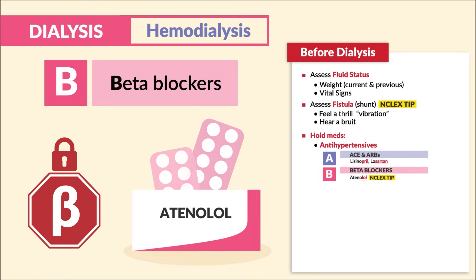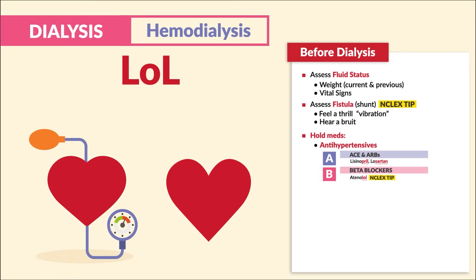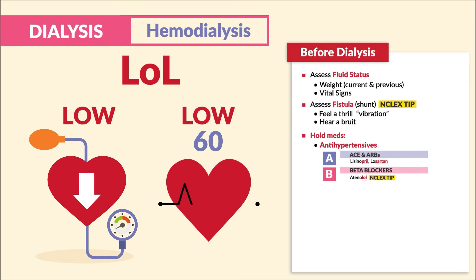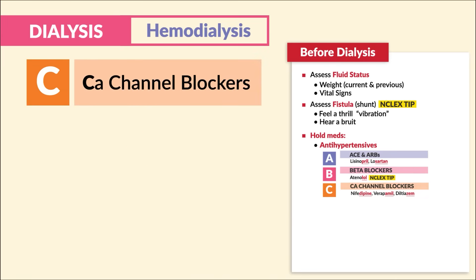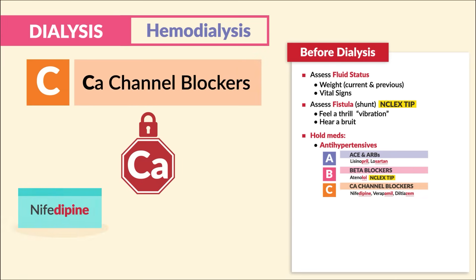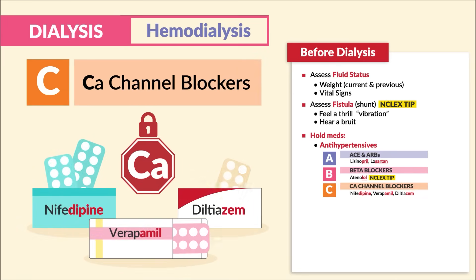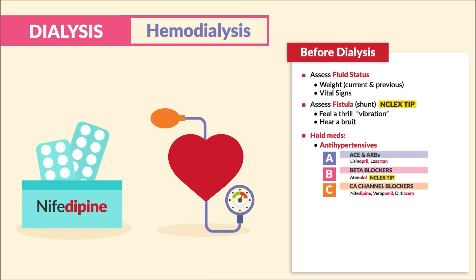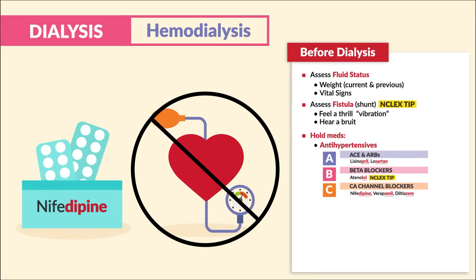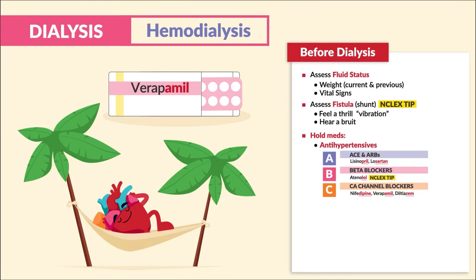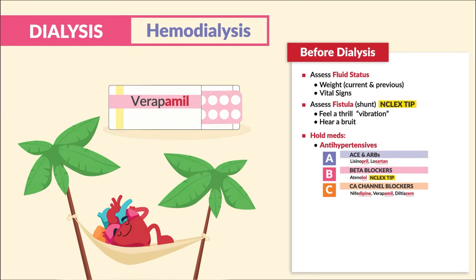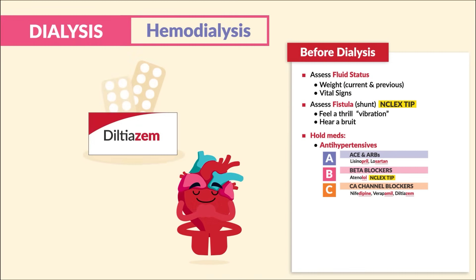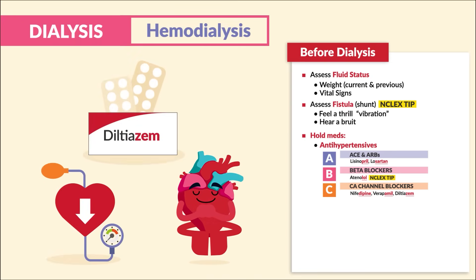Think of the double L's for the double lows — two L's for two low cardiac vitals: low blood pressure and low heart rate. C is for calcium channel blockers, ending in dipine, ipil, and zem. Dipine — just think it declines the blood pressure. Amlodipine is calm and chill blood pressure. And zem in diltiazem is like zen yoga for the heart — decreased blood pressure.